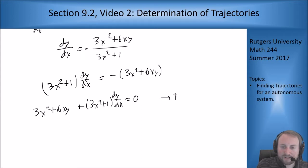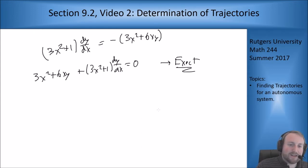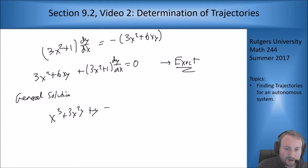And if you check, this guy is exact. So we can solve using exact equations, and what we get is that our general solution is x cubed plus 3x squared y plus y equals a constant.